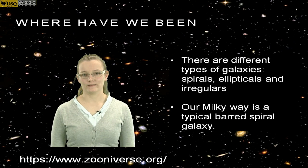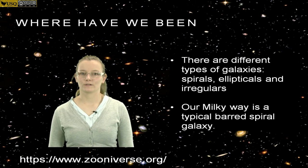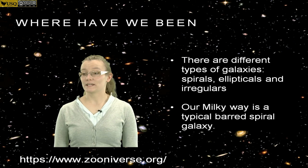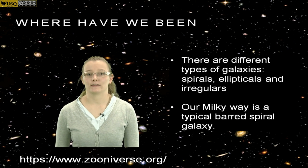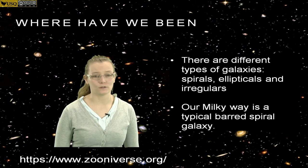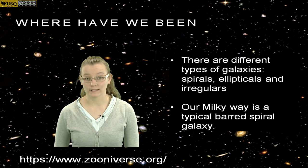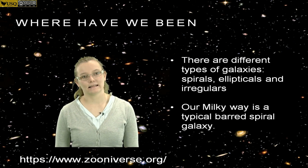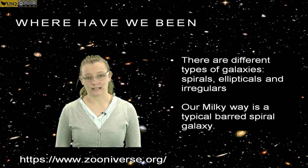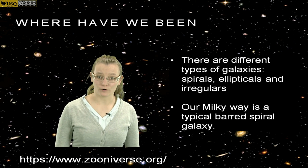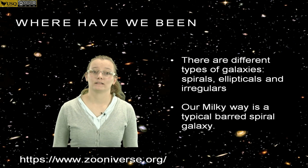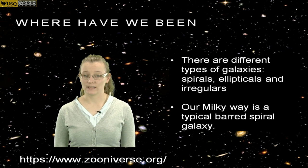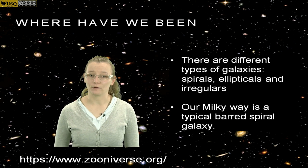Where have we been on this journey of galaxies? We've seen all the different types of galaxies out there — the spirals, the ellipticals, the irregulars, the penguins. And we've even seen our own galaxy, albeit through a drawing: the Milky Way, in the universe, a typical barred spiral galaxy.